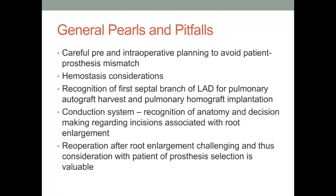The first septal branch of the left anterior descending artery should be meticulously preserved during any proposed pulmonary autograft harvest and subsequent pulmonary homograft implantation. Injury to this vessel can result in significant and at times irreversible left ventricular dysfunction. A careful understanding of the conduction system anatomy is also critical for any root incision made associated with the described enlargement techniques. Particular attention should be paid to the area underneath the commissure separating the right and non-coronary leaflets, extending leftward under the right coronary ostium. In addition, attempts to place a rigid valve prosthesis tightly into the small aortic annulus can produce excessive pressure on the conduction system resulting in dysfunction or block.